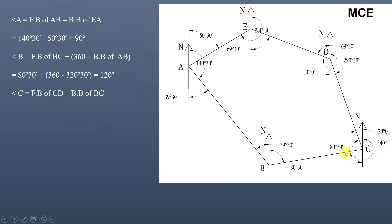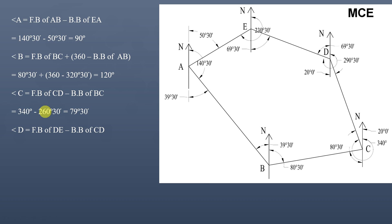Angle C equals the fore bearing of line CD minus the back bearing of line BC. Fore bearing of CD is 340° and back bearing of BC is 260°30', so angle C = 340° − 260°30' = 79°30'.